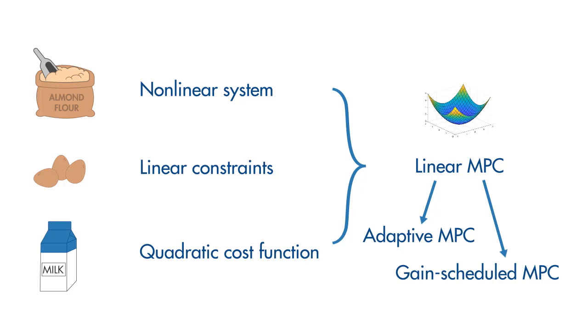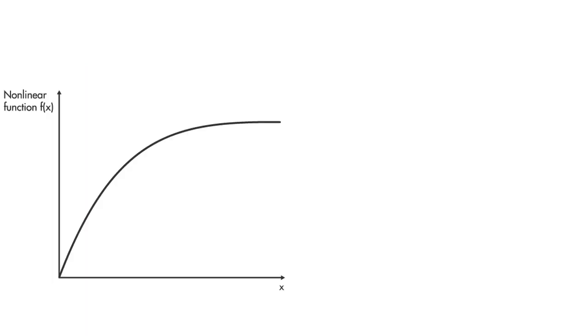The way these controllers deal with a nonlinear system is based on linearization. For example, let's look at this nonlinear function. We can linearize it at an operating point and this gives us a linear function that approximates the nonlinear system well near the operating point.